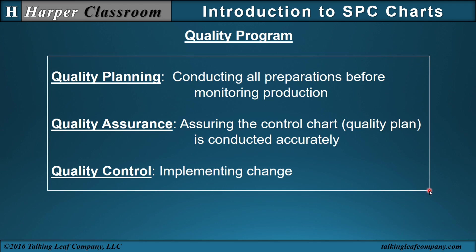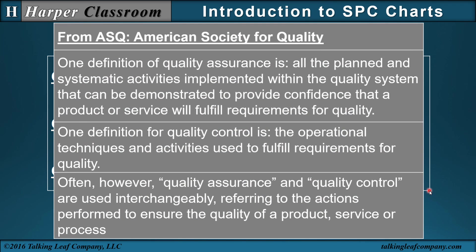That is my definition, but there is no fixed definition of quality assurance and quality control — they are used interchangeably. The American Society for Quality (ASQ) defines quality assurance as all the planned and systematic activities implemented within the quality system that provide confidence that a product or service will fulfill requirements for quality — and note that their definition of quality assurance includes planning, which I separate into quality planning. Their definition of quality control covers operational techniques and activities used to fulfill requirements for quality, which I separate out into quality assurance.